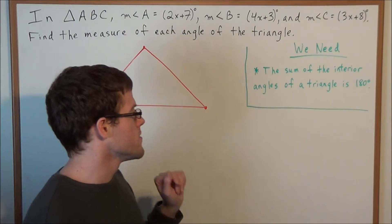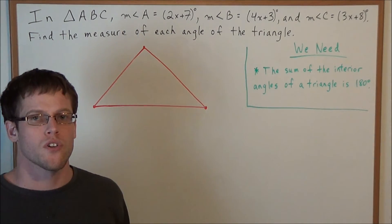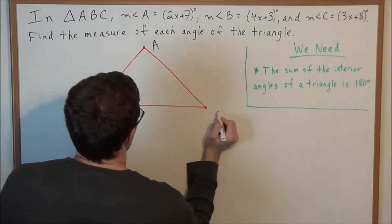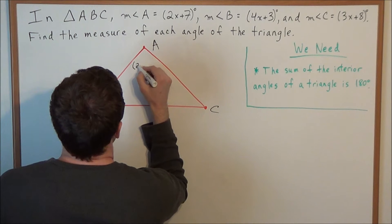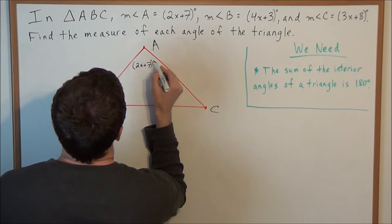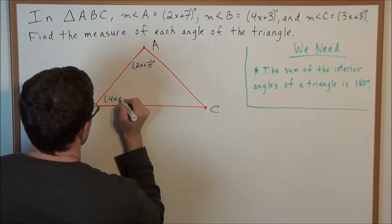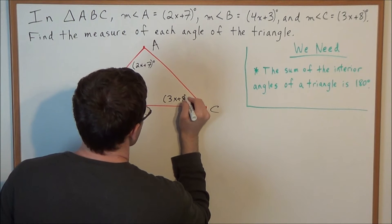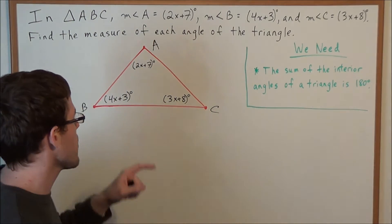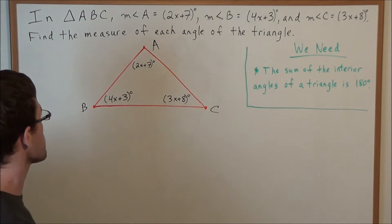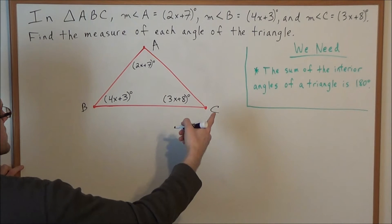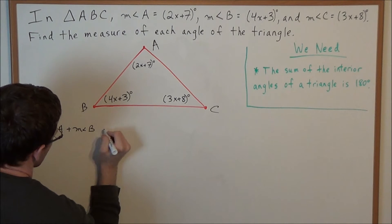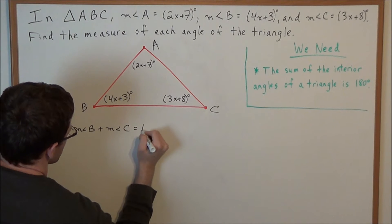We need the following theorem: the sum of the interior angles of a triangle is 180 degrees. So for our triangle ABC, angle A measures 2x plus 7 degrees, angle B measures 4x plus 3 degrees, and angle C measures 3x plus 8 degrees. We need to use this theorem to find the exact measure of each angle, since they're in algebraic form right now. This allows us to say: the measure of angle A plus the measure of angle B plus the measure of angle C equals 180 degrees.